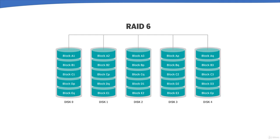RAID 6 — Striping with Double Parity — is similar to RAID 5 but parity data is written to two drives. It requires at least four drives and can withstand two drives failing simultaneously. However, if a drive in a RAID 5 system dies and is being replaced, the rebuild can take hours or more than a day. If another drive fails during that period, all data is lost. With RAID 6, the array can survive that second failure.